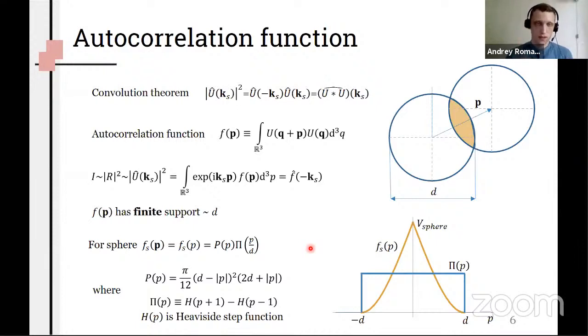As you can see, intensity is proportional to the square of the Fourier transform of indicator function, but using convolution theorem we can reduce it to linear Fourier transform and obtain the autocorrelation function of the particle, which means the intersection of volume as presented here. It is important to note that this function has a finite support, the domain where function does not equal to zero.